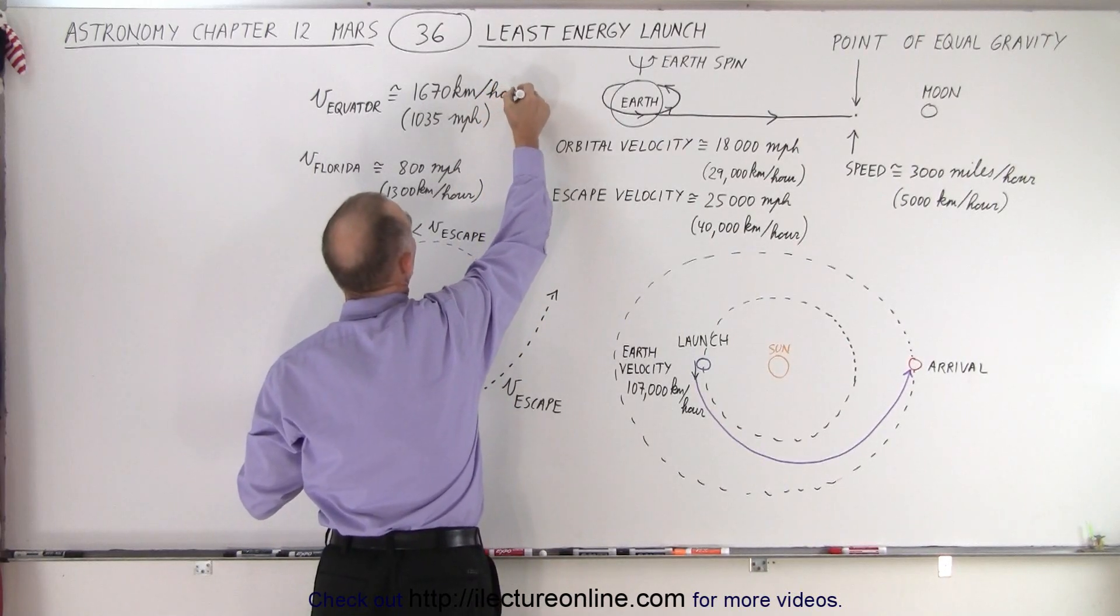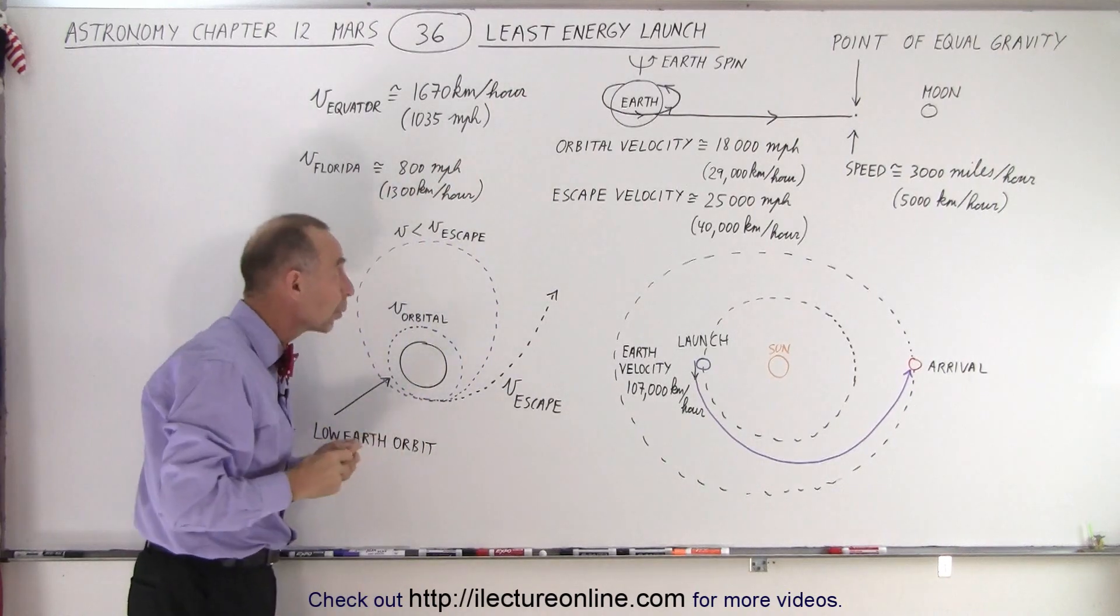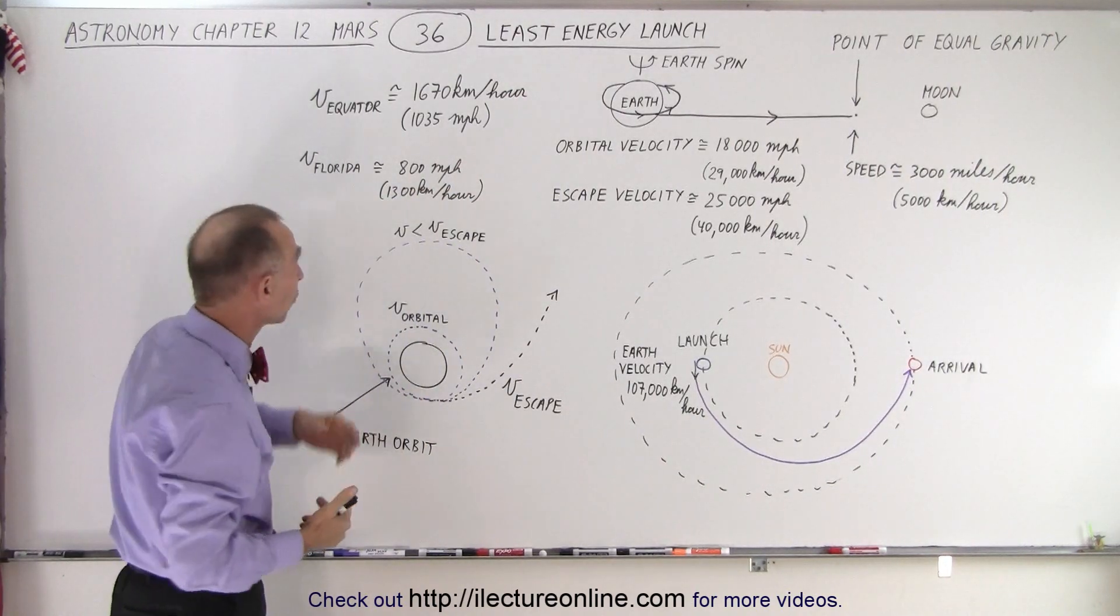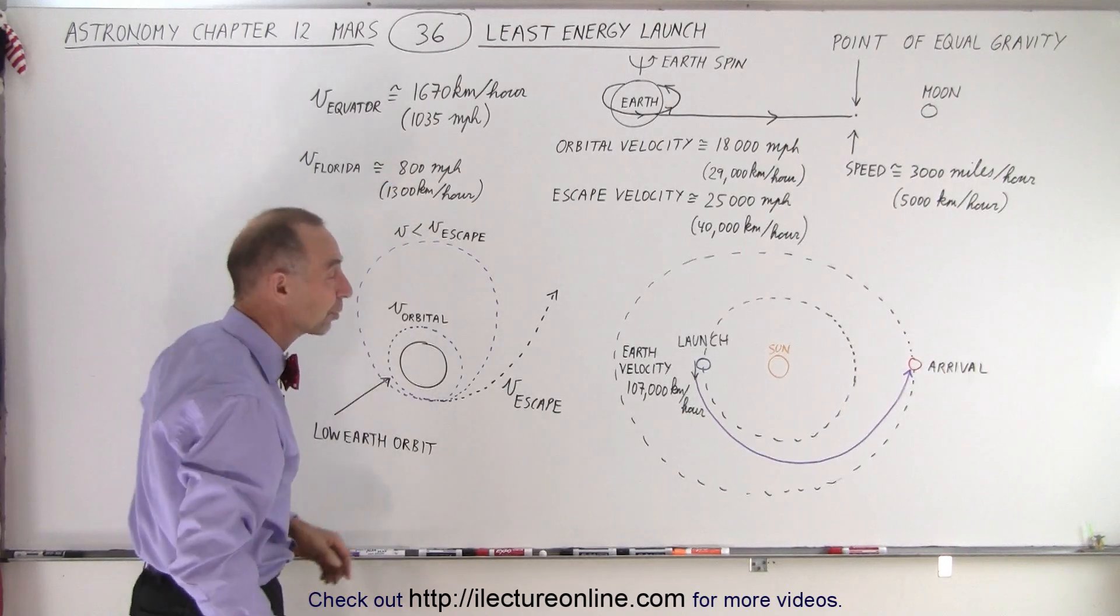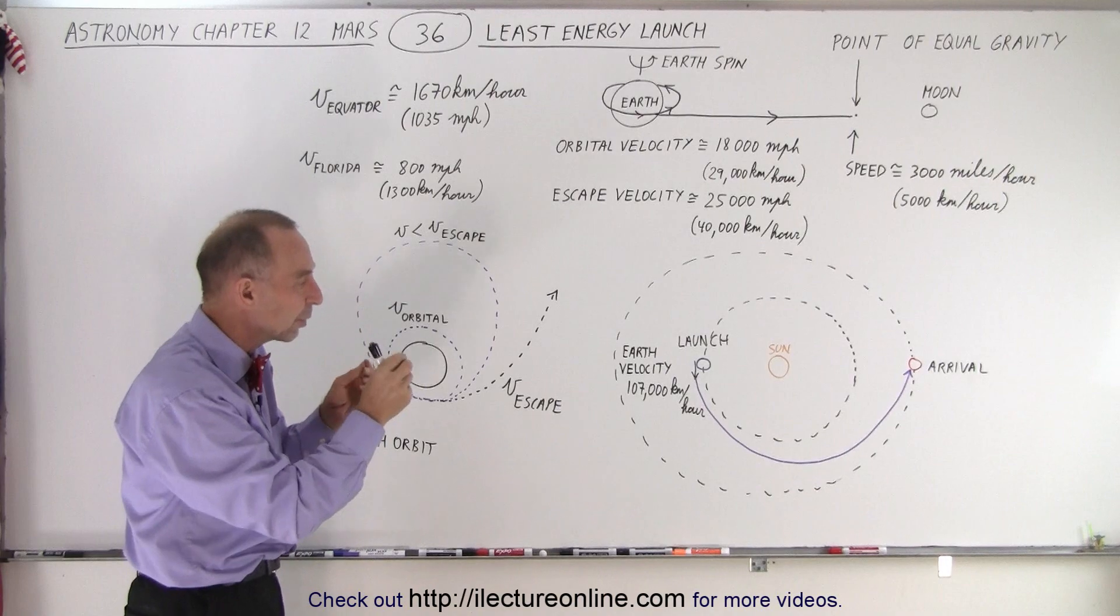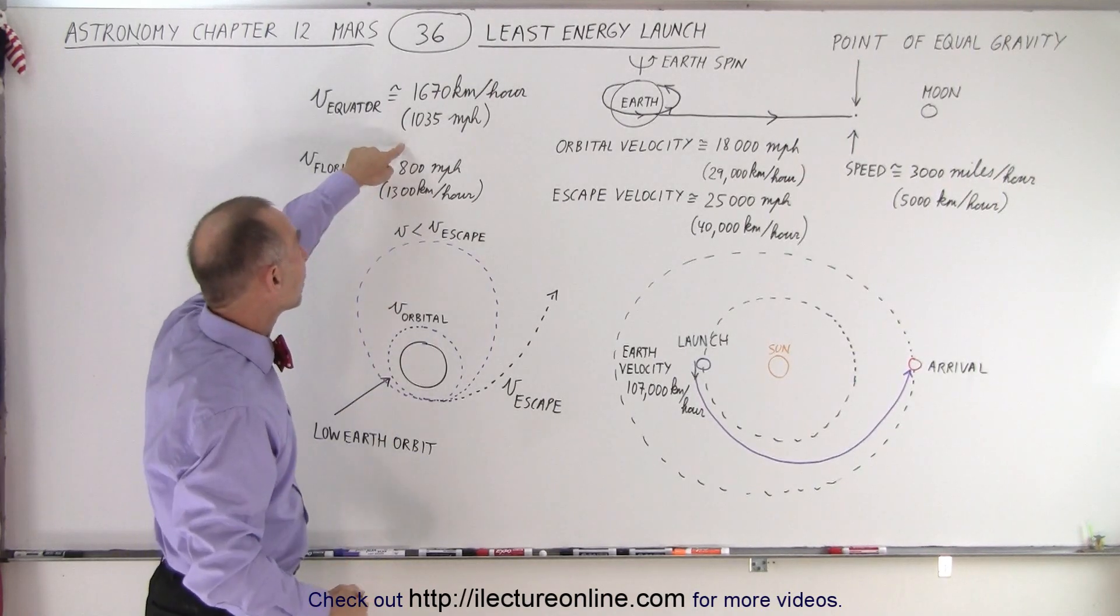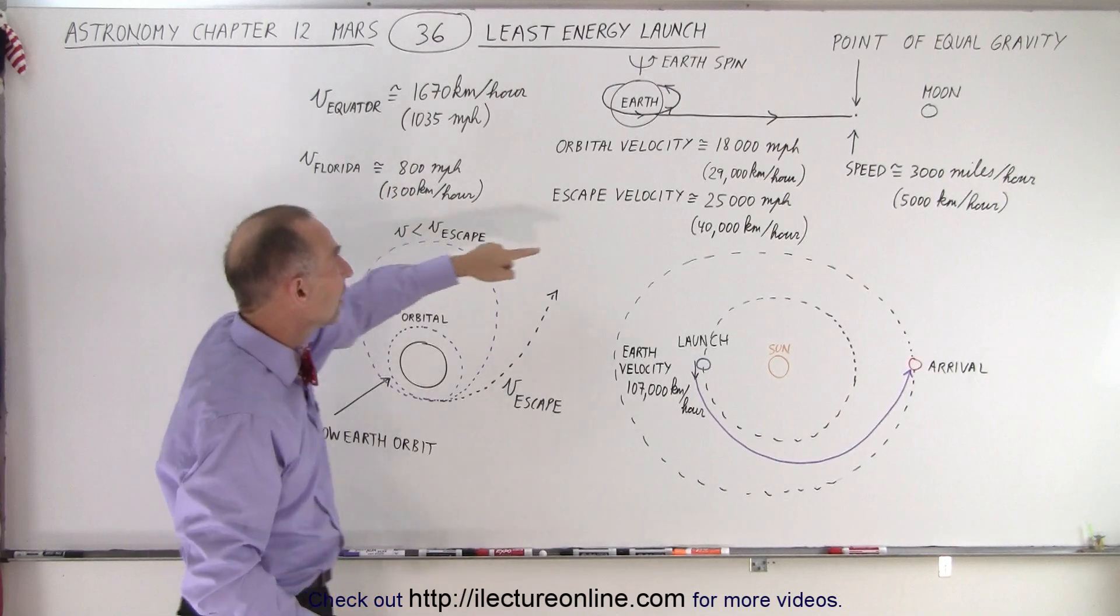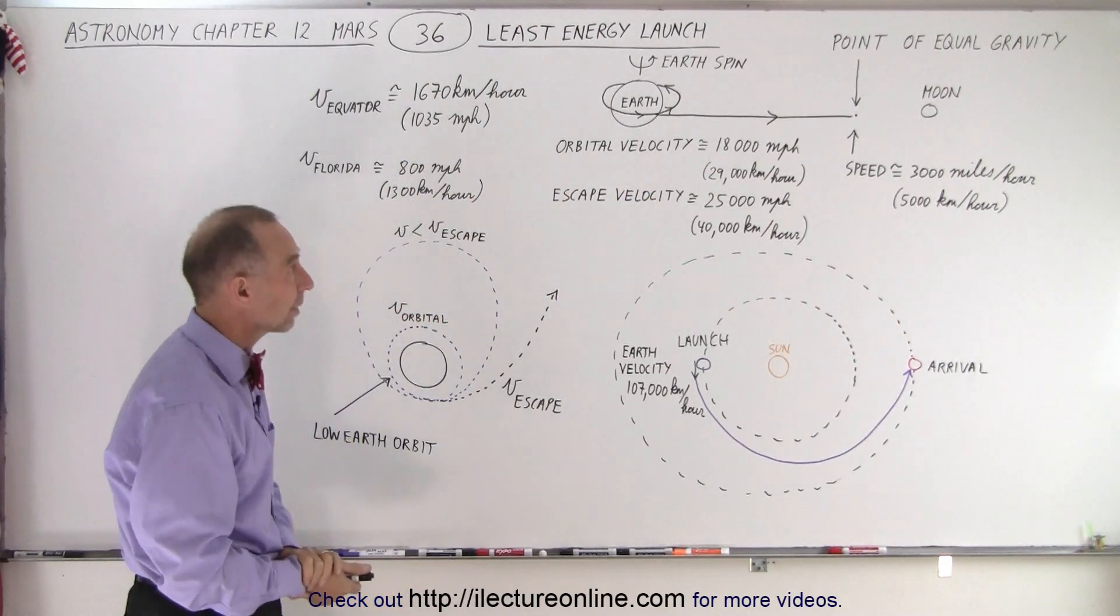In Florida, where the United States launches most of its rockets, that speed is about 800 miles per hour, which is about 1300 kilometers per hour. So you have that additional speed already just from launching in the direction of the earth's spin, and then you only need to gain the additional energy to get up to 18,000 miles per hour or 29,000 kilometers per hour.